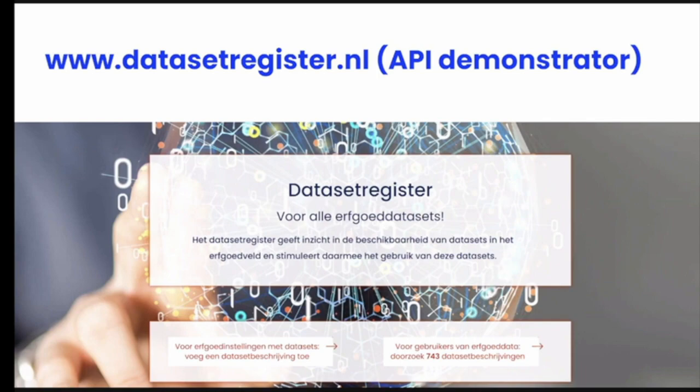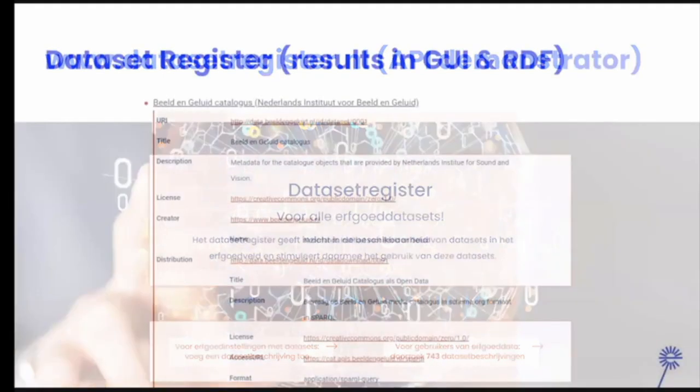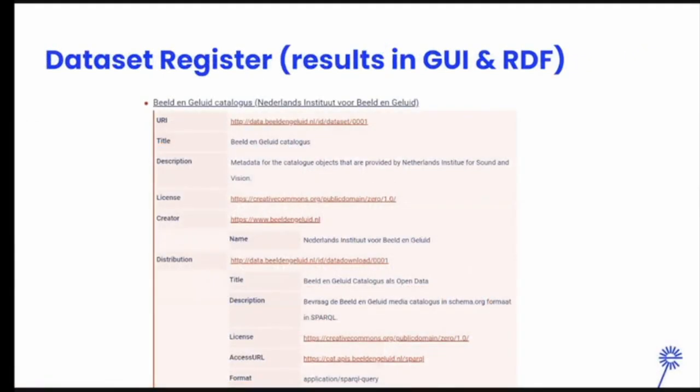The demonstrator has several parts. The main part, of course, is getting the dataset descriptions searchable. At the moment there are over 700 dataset descriptions from several Dutch and Belgian heritage institutions which can be searched. This is what a dataset description looks like — one of the search results — Sound and Vision.